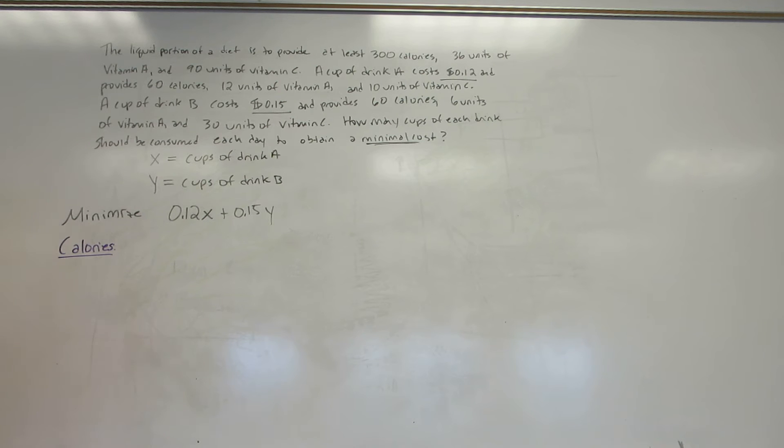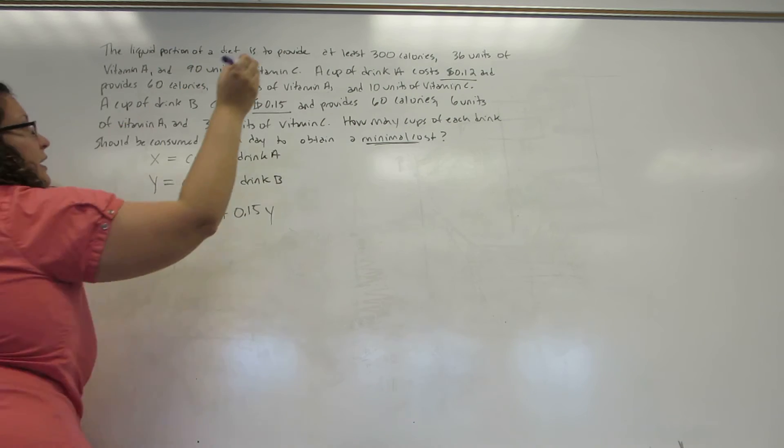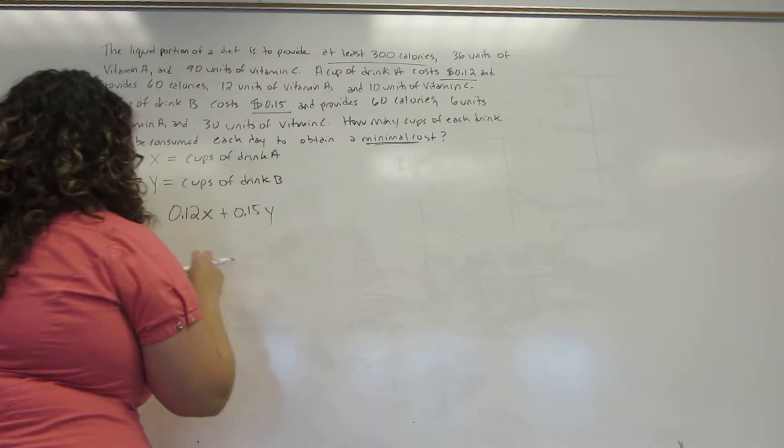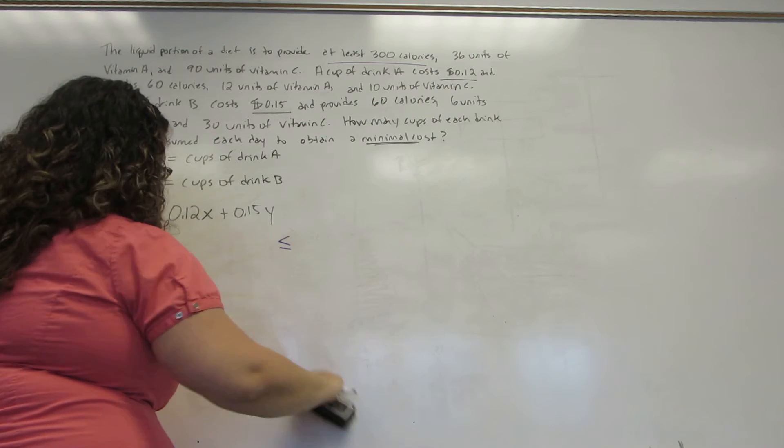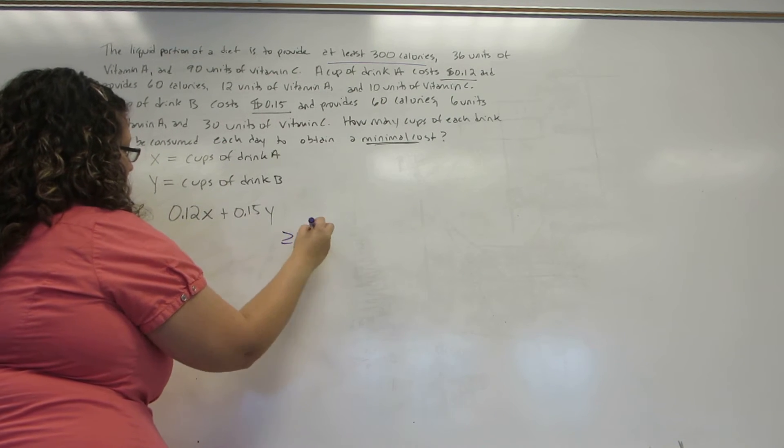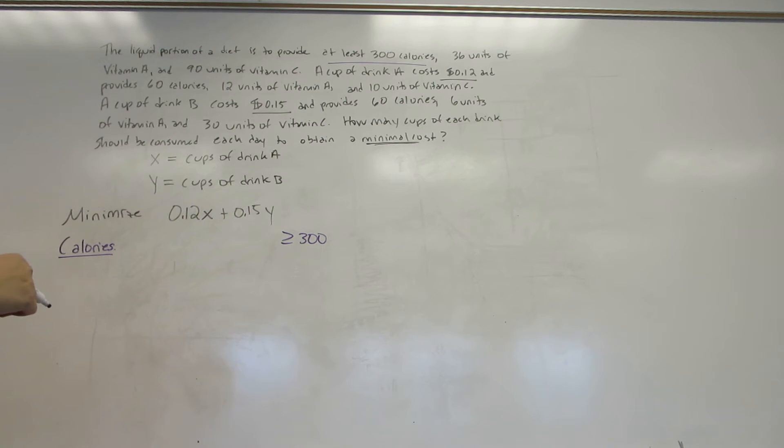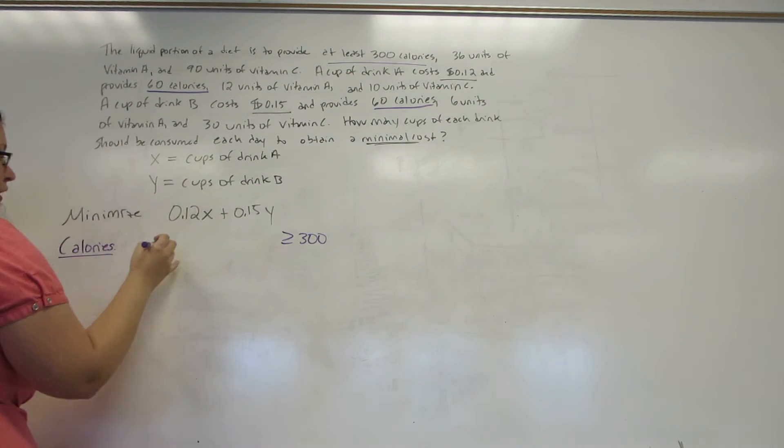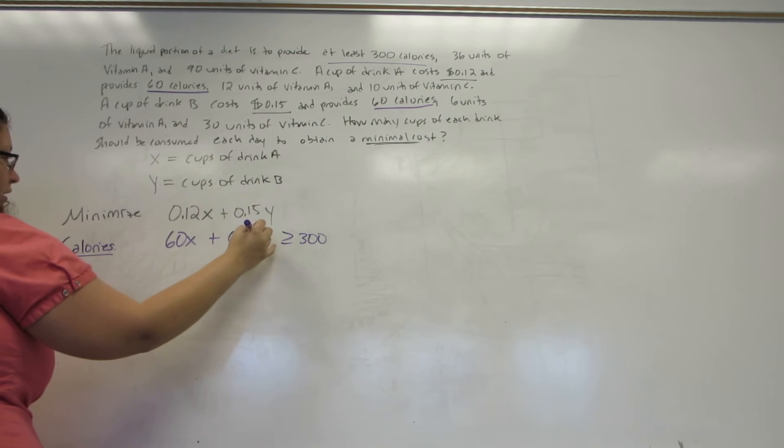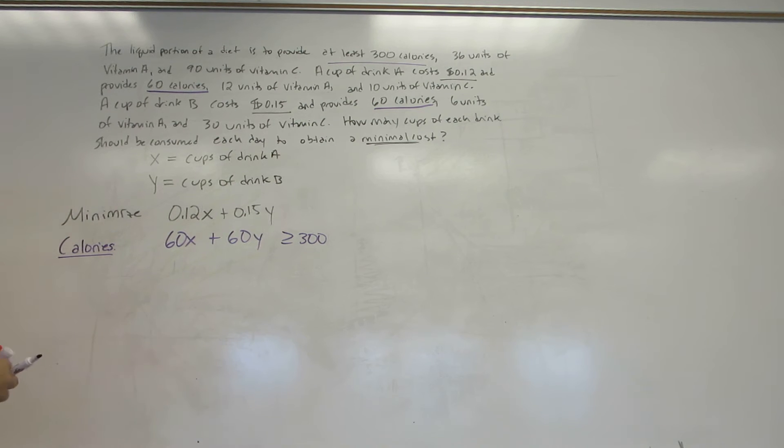I like to label them so it helps me remember where they came from. For calories, I need at least 300 calories. This means that however many I actually get should be greater than or equal to 300. Then I go through and look for any other information about calories. I see that drink A gives 60 calories, as well as drink B per cup. So it's 60 times how many cups of drink A and 60 times how many cups of drink B.